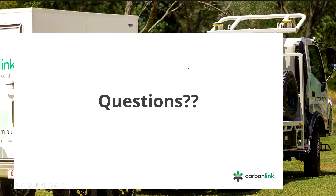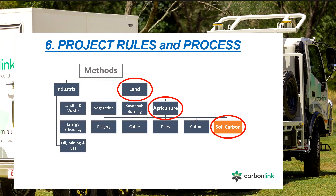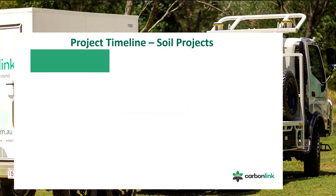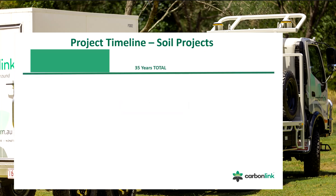There are industrial and land methods. Under land there's vegetation, savannah burning, and agricultural ones — some for piggeries, cattle, dairy, cotton, and others. The one we're discussing here is the soil carbon method. A project can run for 35 years — let's look at how that works.